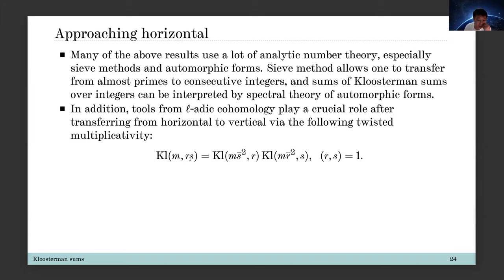The key observation in the proof is that we want to transfer from the horizontal distribution to the vertical distribution. This multiplicativity, as a consequence of the Chinese Remainder Theorem, plays an important role. If you sum over r and s you have a horizontal distribution for this Kloosterman sum. But you have a product of Kloosterman sums, so for r you take the sum over s in the vertical direction, and for s you sum over r also in the vertical direction.